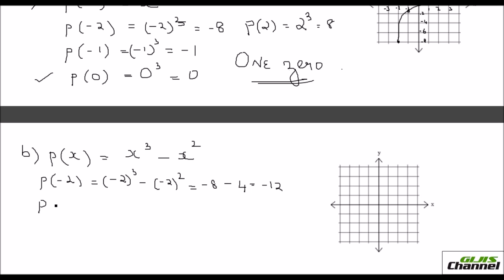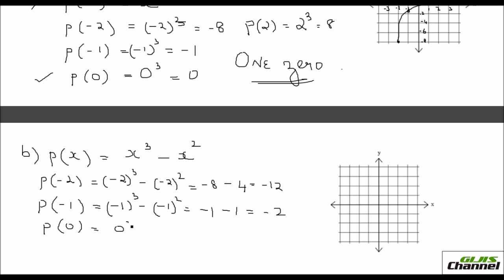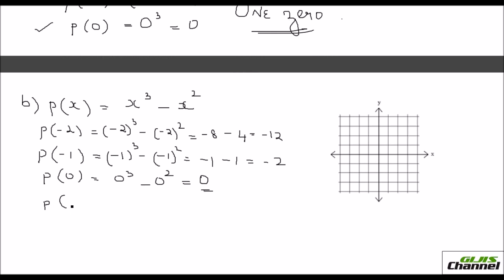Next, P of negative 1: that's minus 1 the whole cube minus minus 1 the whole squared. Minus 1 cube is negative 1, and the squared term becomes positive 1, but with the negative sign outside it is minus 1. So that is going to be minus 2. Then P of 0: it is 0 cube minus 0 square, which is 0 — so you got 1 zero. Now P of 1: that will be 1 cubed minus 1 squared, which is 1 minus 1 = 0 again. So you got 2 zeros now.